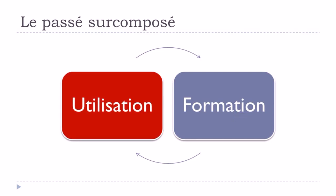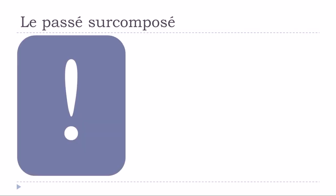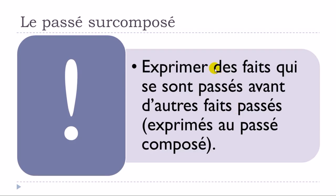So, l'utilisation first: we will use le passé surcomposé pour exprimer des faits qui se sont passés avant d'autres faits passés exprimés au passé composé. In other words, when you want to express something in the past you normally use the passé composé, but if you want to express facts that happened before those past events, you would use le passé surcomposé — though we do also have the plus-que-parfait tense for this.